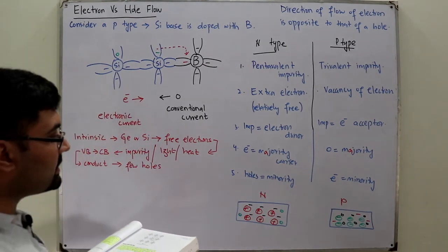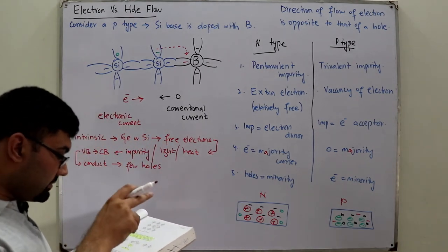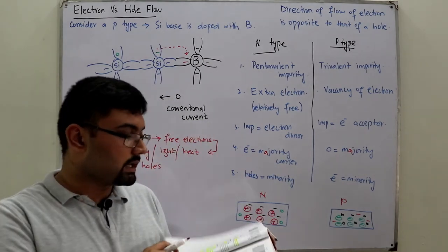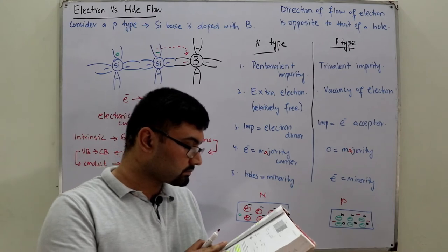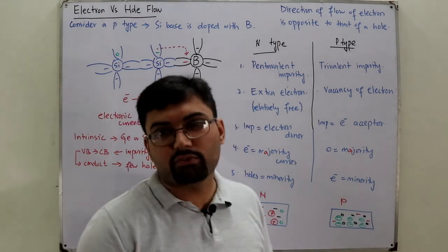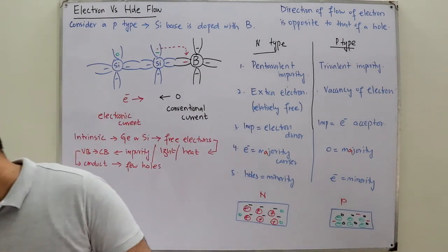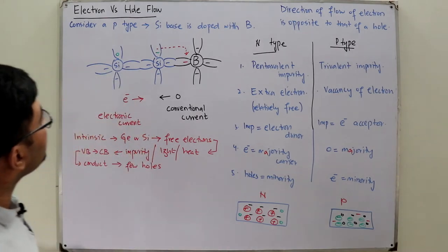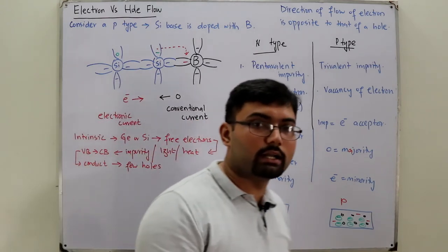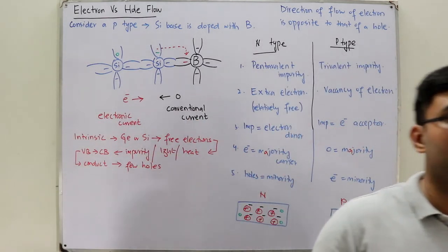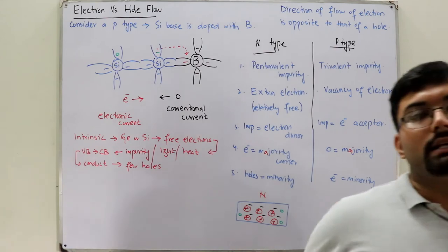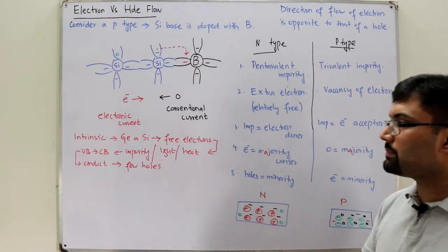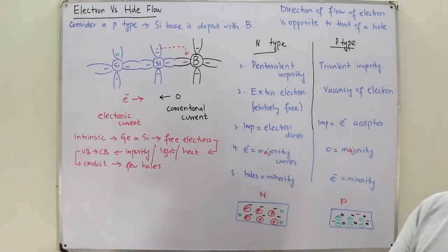For a p-type material, the hole is the majority carrier. With that, the basic understanding of semiconductor physics and devices is complete. The difference between conductors, insulators, and semiconductors is done; intrinsic and extrinsic are done; n-type and p-type are done; electron and hole concepts are done.